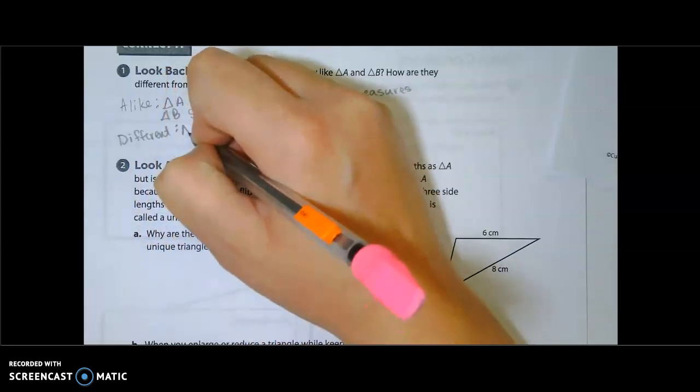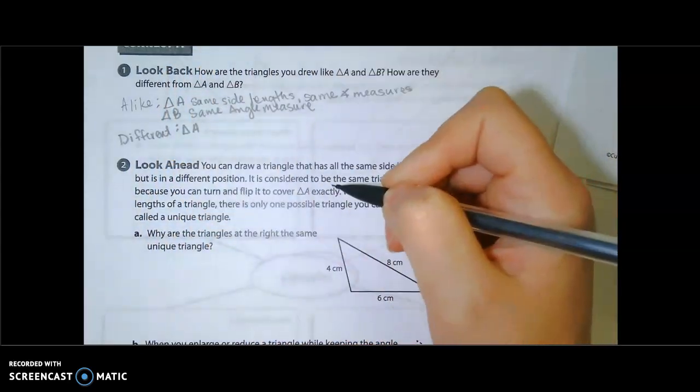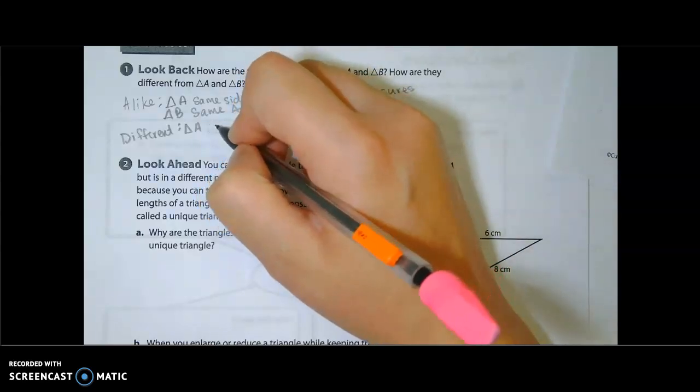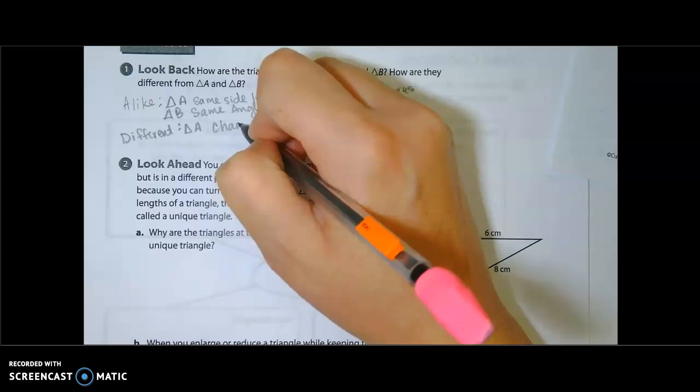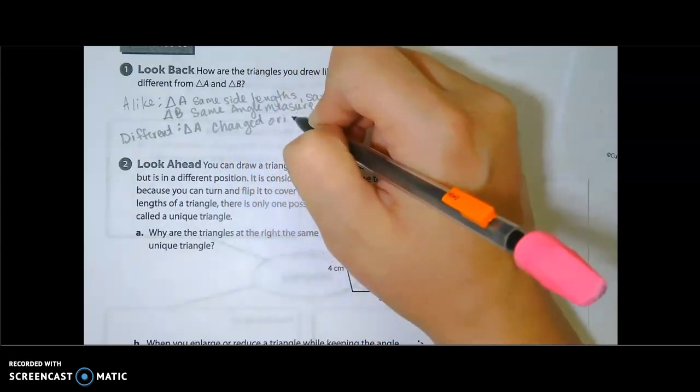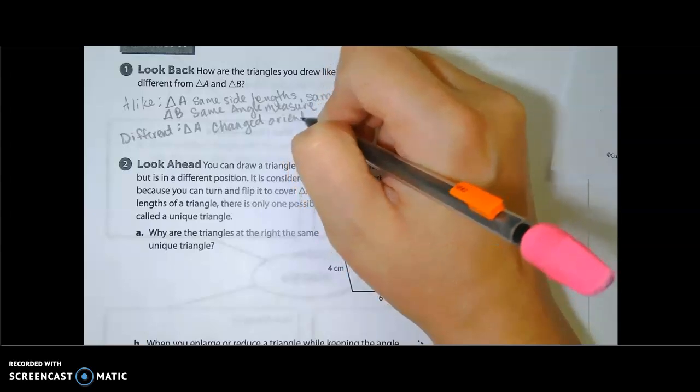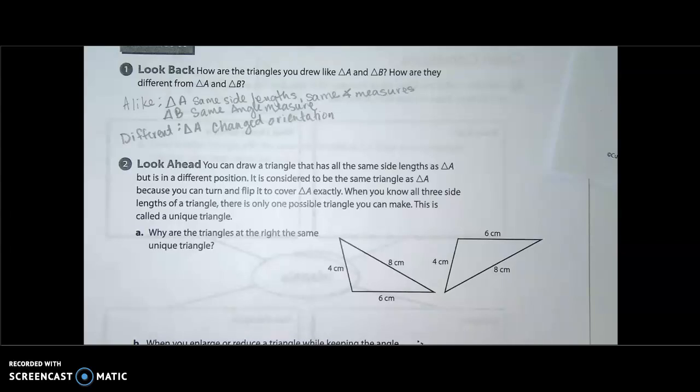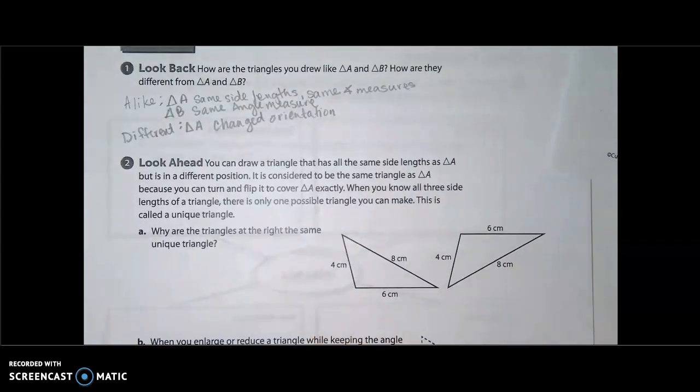Well, the thing about triangle A is that the only way triangle A is different is if you changed its orientation. That just means the way it was drawn, kind of like these two triangles down here. Their orientation is different. What was on bottom is no longer on bottom.